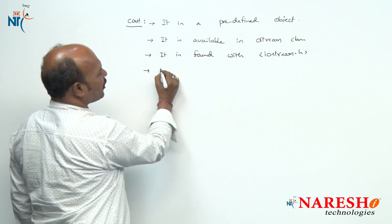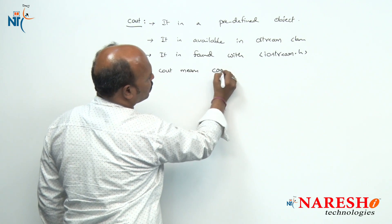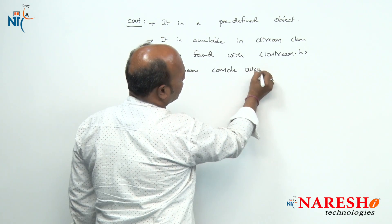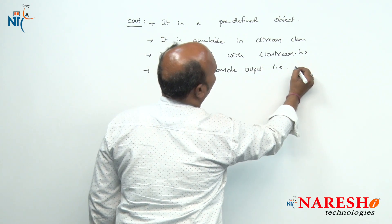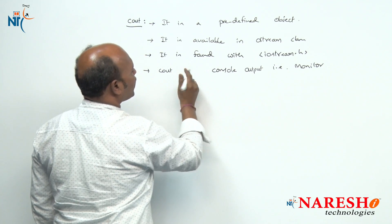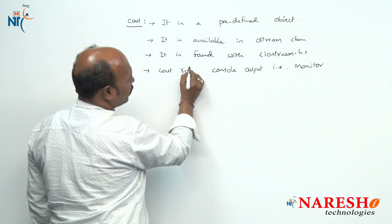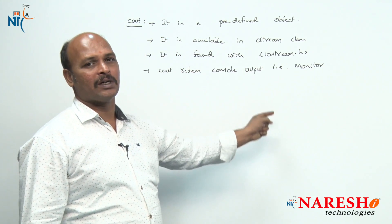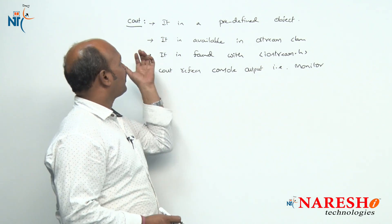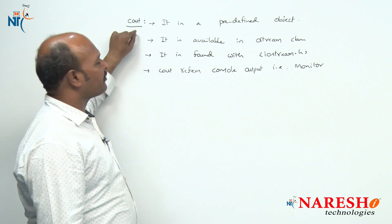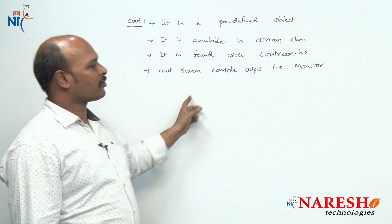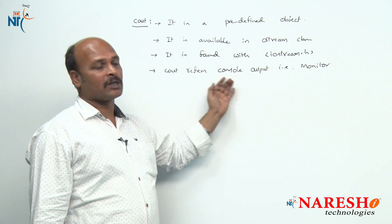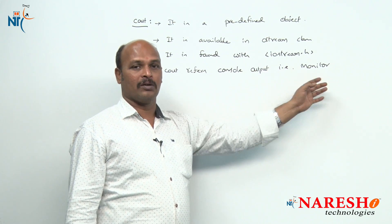Cout stands for console output. Cout always refers to the console output device, which is nothing but the monitor. Whatever text or variables we use with cout, they are going to be printed on the monitor.